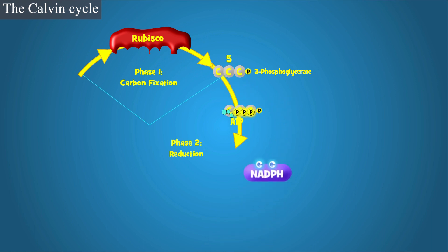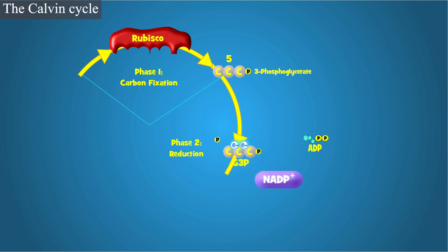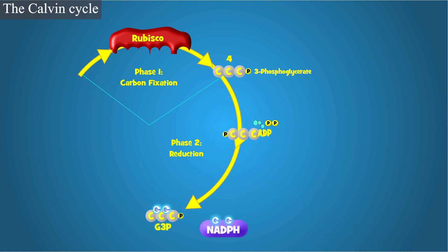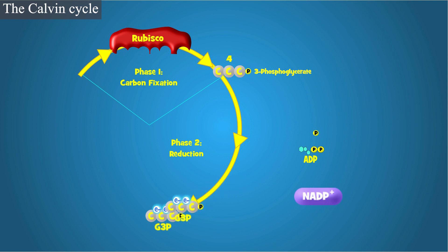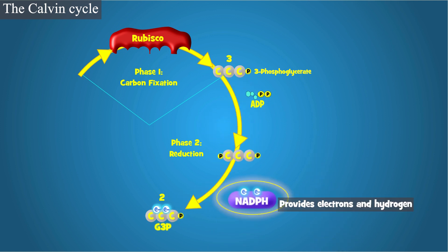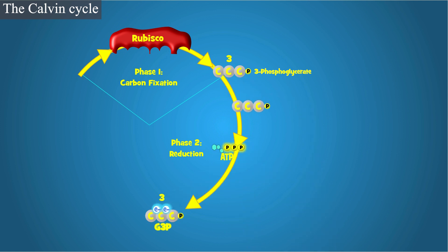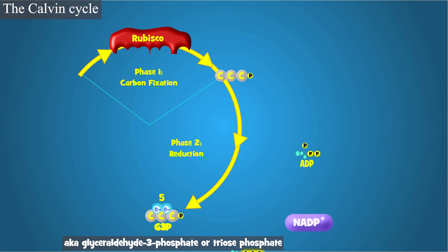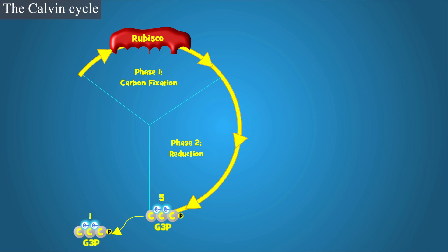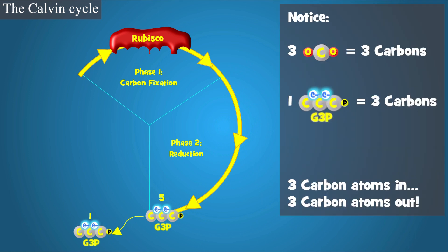Phase 2: Reduction. In the reduction phase, ATP from the light reactions provides energy to make an intermediate compound. This reactive intermediate can then be reduced, or gain electrons and hydrogen. The electrons and hydrogen come from NADPH and are used to reduce the intermediate compound to make glyceraldehyde 3-phosphate, more commonly called G3P, or sometimes triose phosphate. G3P is the key product of the Calvin Cycle that can be used to make sugar. Notice that for every three molecules of CO2 brought into the Calvin Cycle, there is a net gain of one G3P — three carbons in, three carbons out. Makes sense, right?